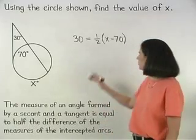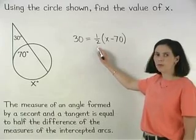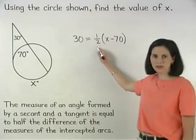Now solving for x in our equation, our first step is to get rid of the 1 half by multiplying both sides of the equation by 2.